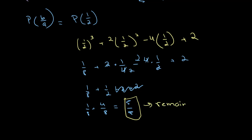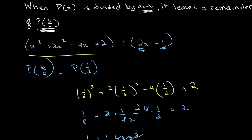This is our remainder when we divide this polynomial x³ + 2x² - 4x + 2 and we divide it by 2x - 1.